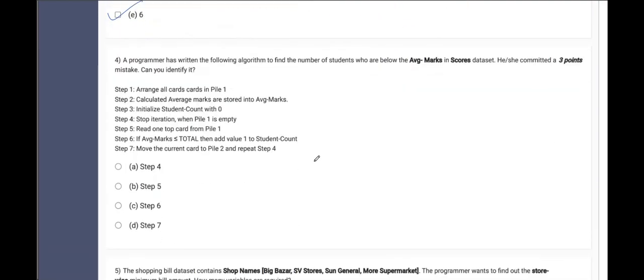A programmer has written the following algorithm to find the number of students who are below average marks in scores dataset. Again, this is a find the mistake type of question. Arrange average marks. Calculate average marks are stored into average marks. This is a variable, right? Initialize student_count with zero. Yes, this is true, because without having read any cards, we can never initialize the student count to be some positive value. So this is also correct. Stop iteration when pile1 is empty. Good. Read one top card. Great. If average total marks is less than equal to total. Yes, see here. If you observe this, we should have checked it to be total less than equal to average. This must have been the step. But here they have written ulta-pulta, that is in the reverse order. Therefore, step 6 is an error here.